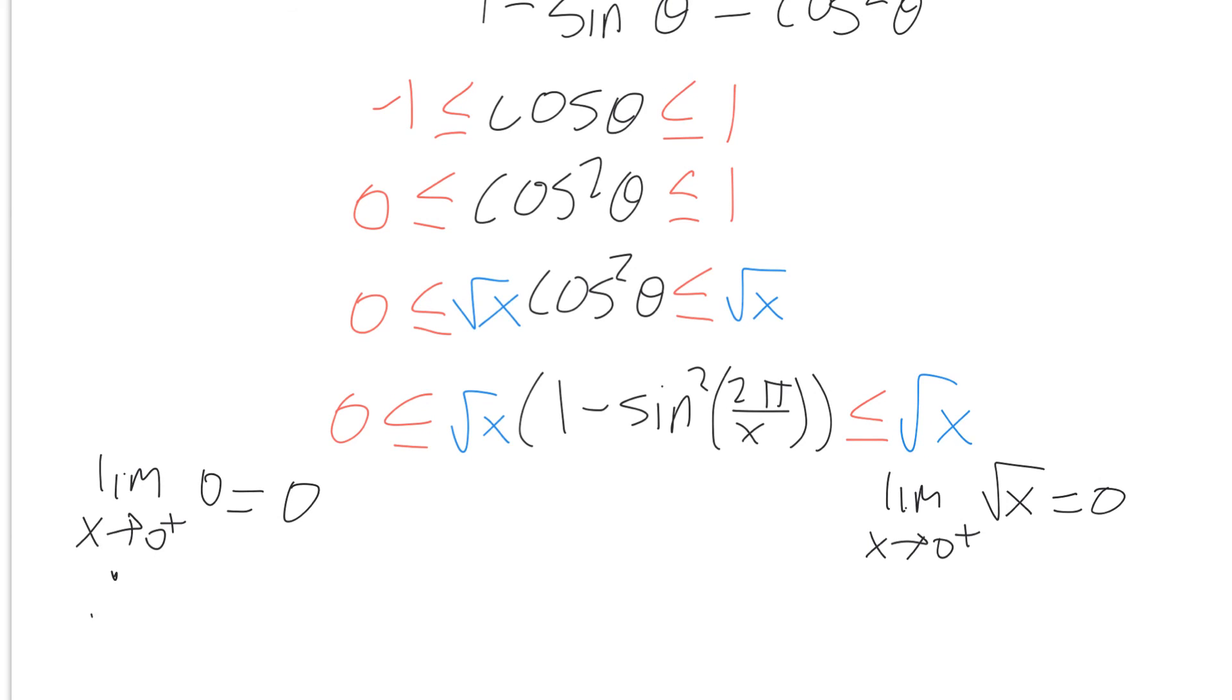So finally we can say, therefore, by the squeeze theorem, the limit as x approaches 0 from the right of √x·(1 - sin²(2π/x)) equals 0. Thanks for watching.